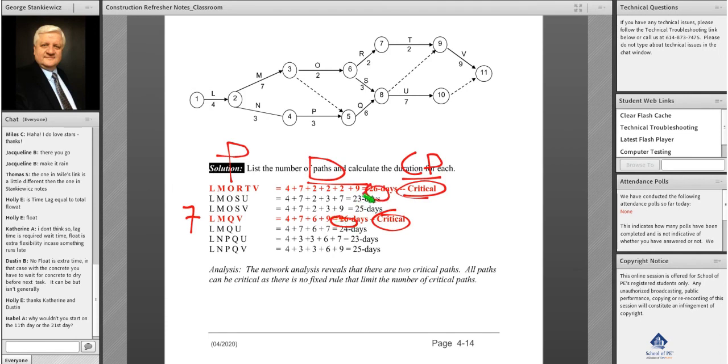You list all seven and you find that there are two critical paths. The project's going to be 26 days. So as a result, we know that there is no rule that says there's only one critical path through the network. All seven could be critical, so there's no such thing that says I only have one critical path.